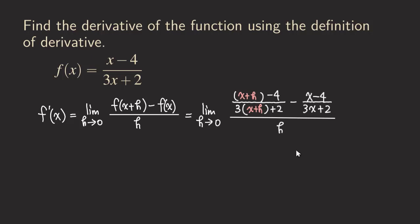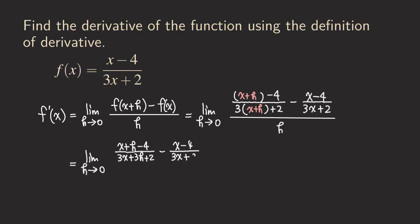The next step is to simplify this so that we can distribute the three and remove all the parentheses. So we get x plus h minus four, all over three x plus three h plus two, then minus the original function x minus four, all over three x plus two. The denominator is just h.